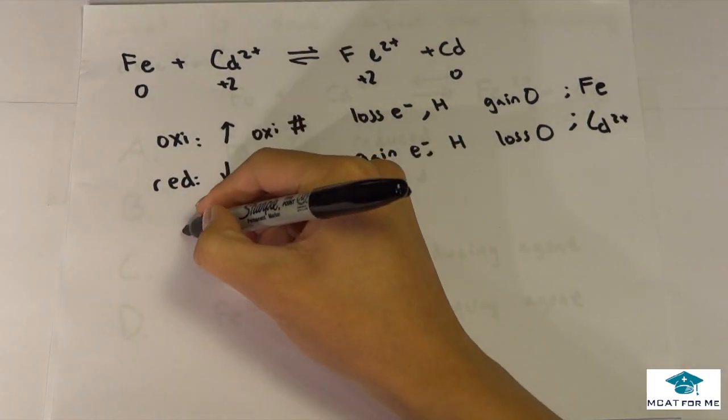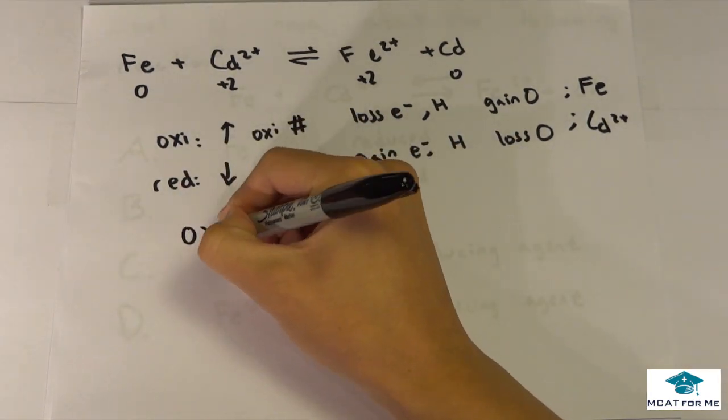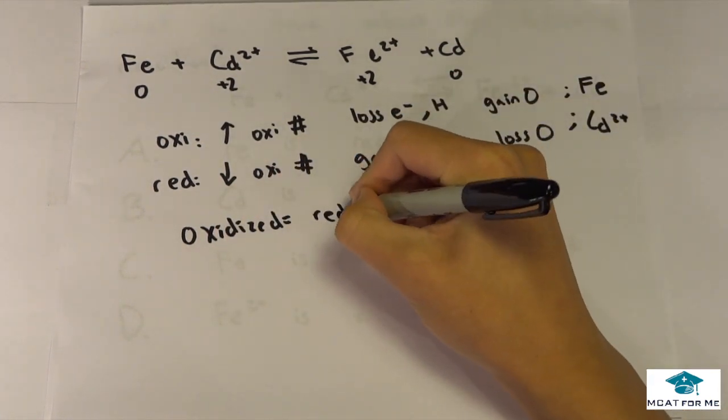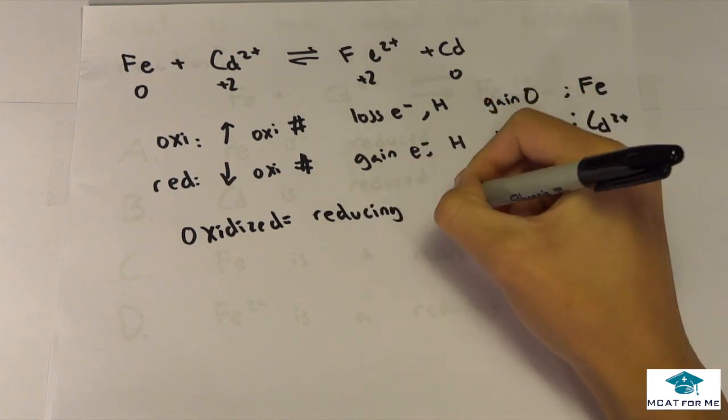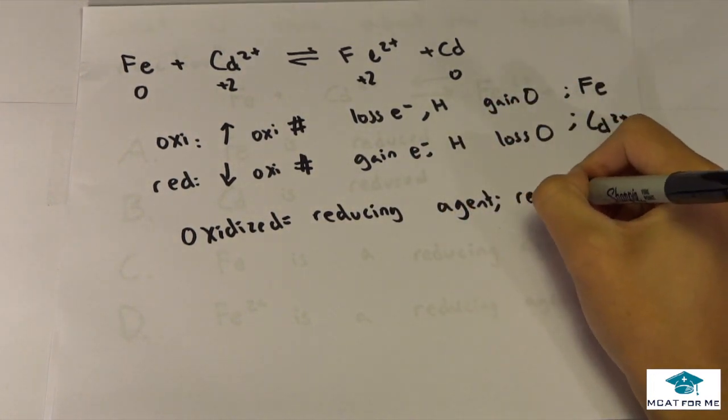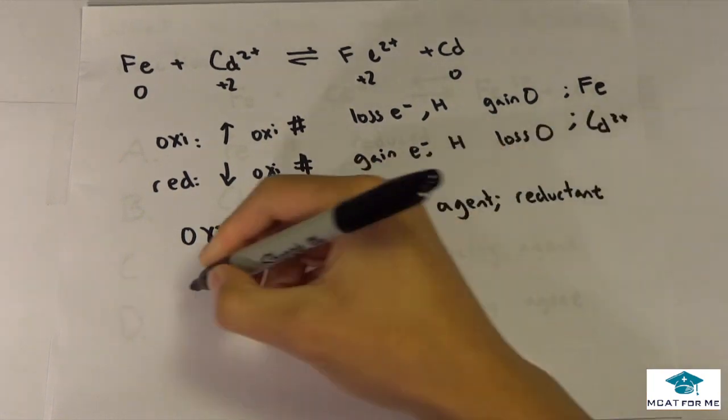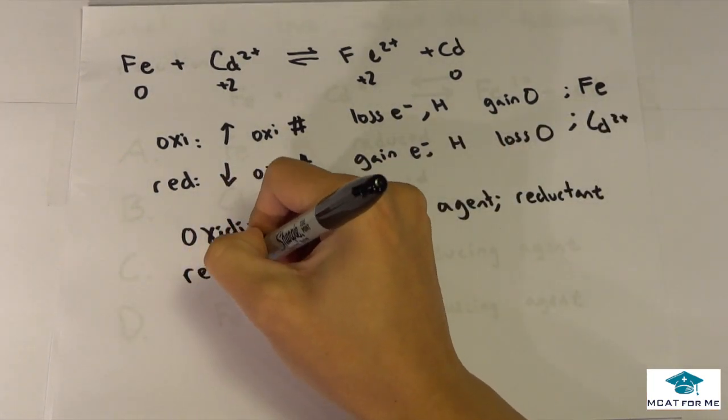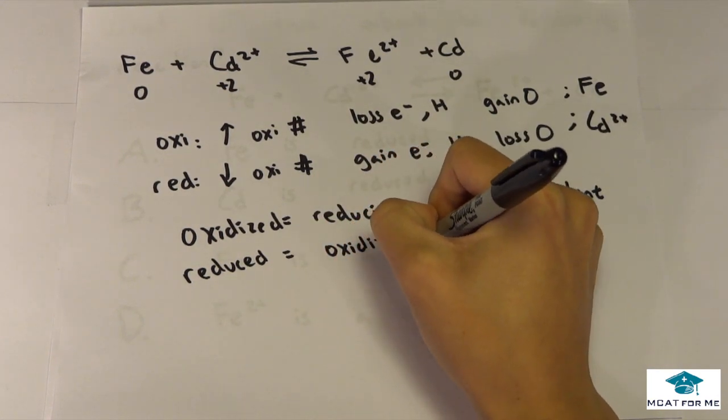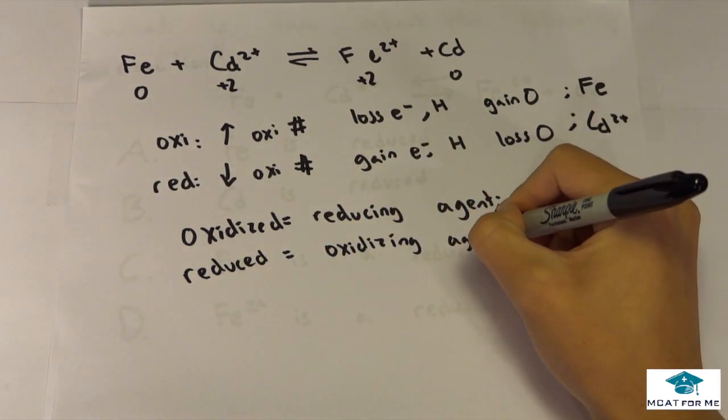So now what we have to see is that something that is oxidized, it also is a reducing agent because it causes reduction or the reductant. And something that is reduced is the oxidizing agent or the oxidant.